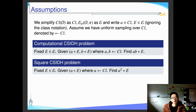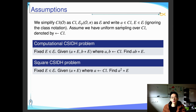We will simplify the notations for the group and the set, and we also ignore the class notation. We assume that we have uniform sampling of this ideal class group, which can be done using CSIDH parameters such as CSIDH-512.